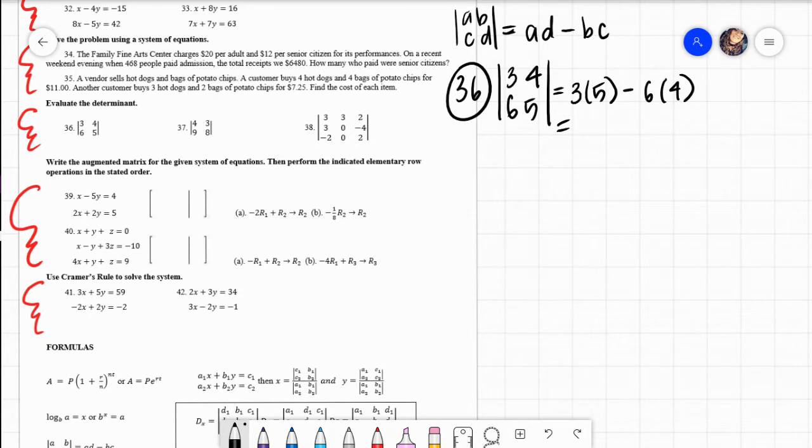So if you do 3 times 5, you get 15. Signs are the same, so it's positive. And then if you do 6 times 4, you get 24. Signs are different, so it's negative. And then if we combine those, a positive 15 and a negative 24, because signs are different, what we do is subtract, keep the sign of the larger. The determinant is a negative 9.